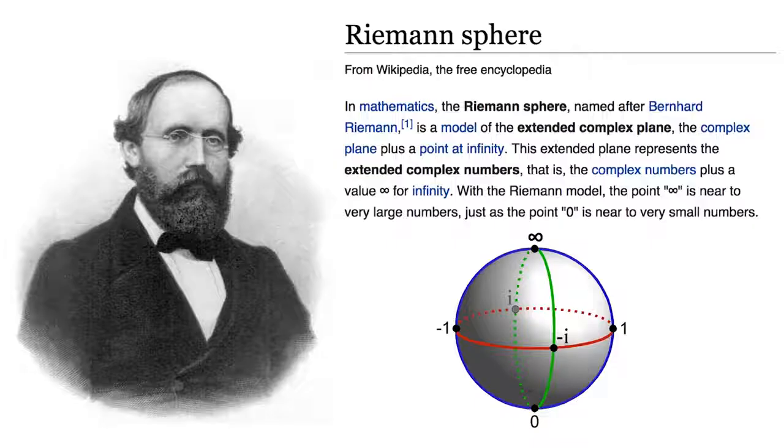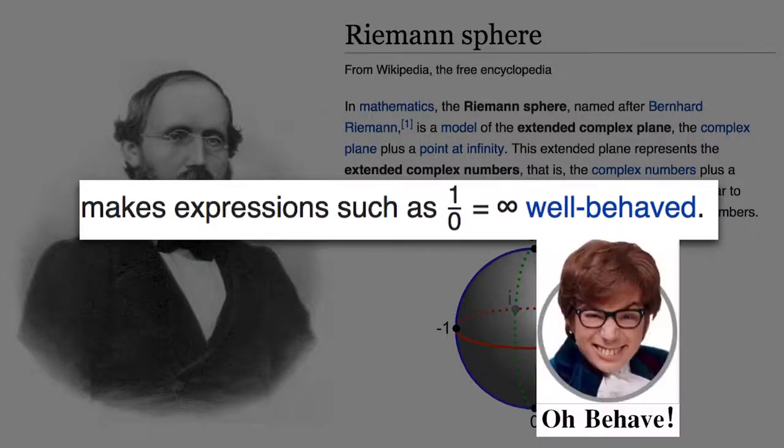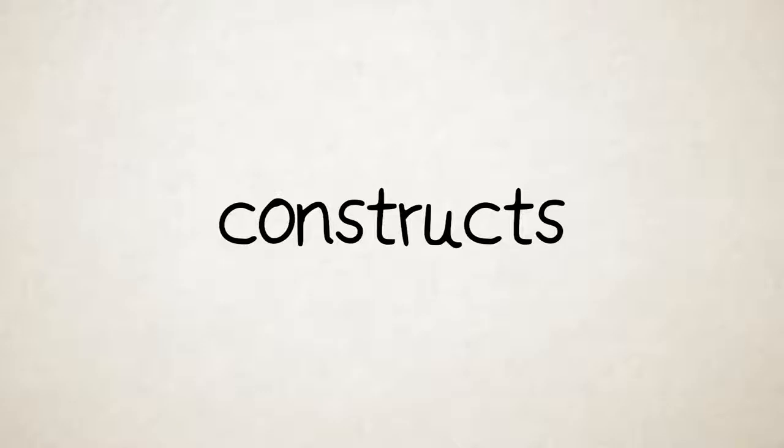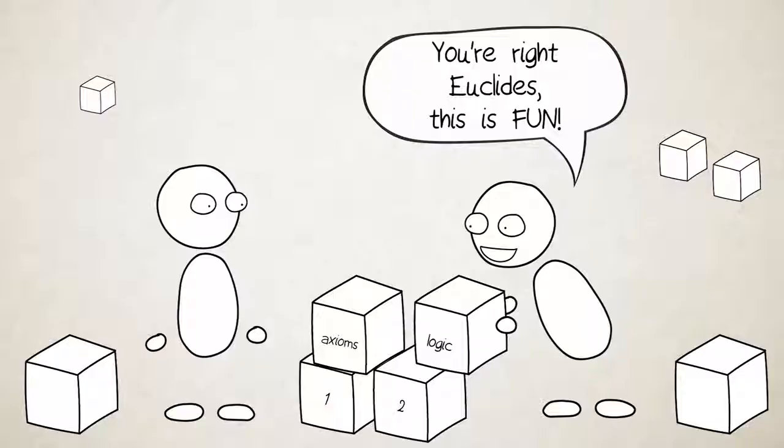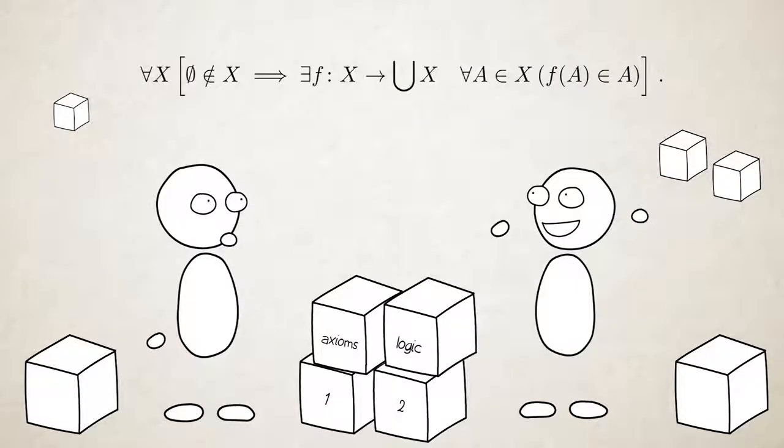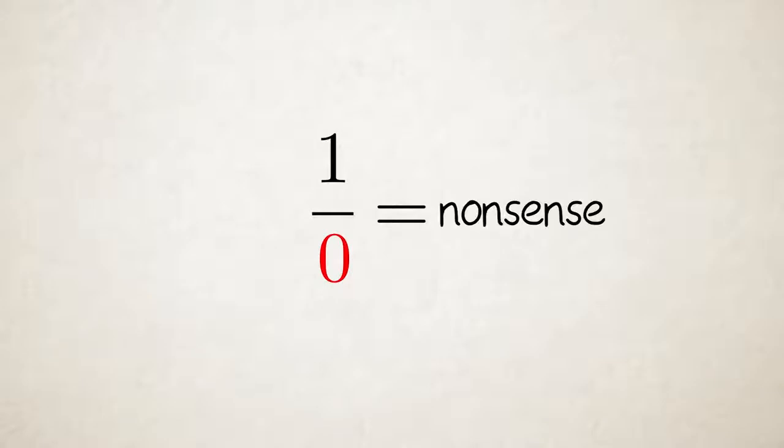Unless you use a Riemann sphere in the complex plane which allows for division by 0 in some circumstances in a way that makes expressions such as 1/0 = ∞ well behaved. The point is that these are just constructs. They don't exist in the real world. They're more like ideas.